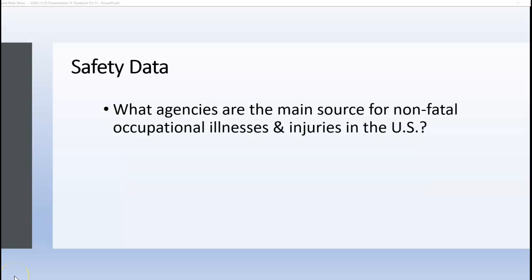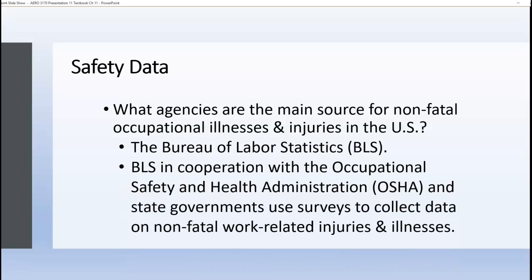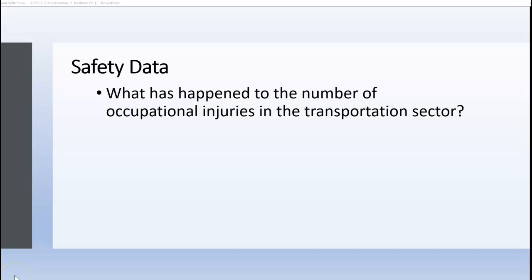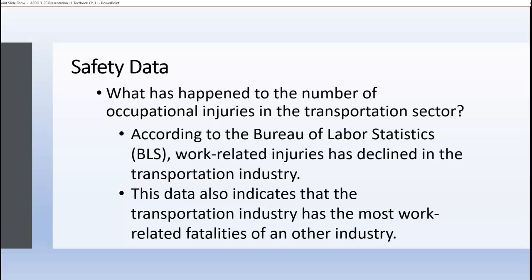For non-fatal occupational illnesses and injuries in the U.S., the best agency for that data is the Bureau of Labor Statistics, or BLS. BLS, in cooperation with OSHA and state governments, uses surveys to collect data about non-fatal work-related injuries and illnesses. BLS data indicates that work-related injuries have declined in the transportation industry, but the transportation industry still has the most work-related fatalities of any other industry.